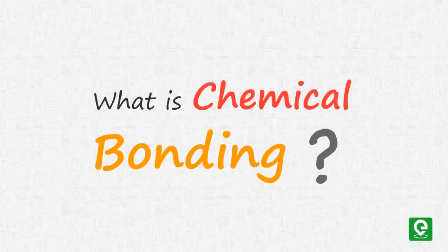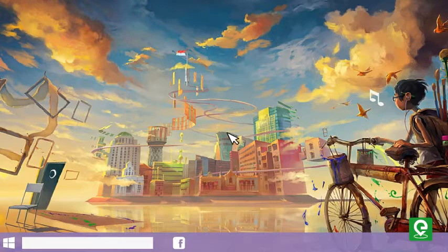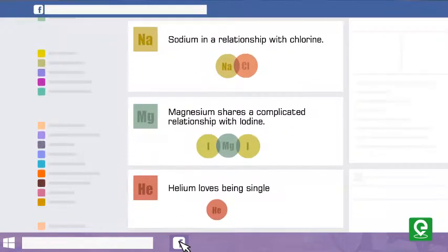What is chemical bonding? I logged into my Facebook account last night and to my surprise, my Facebook wall was filled with relationship statuses: sodium is in a relationship with chlorine, magnesium shares a complicated relationship with iodine, helium loves being single.